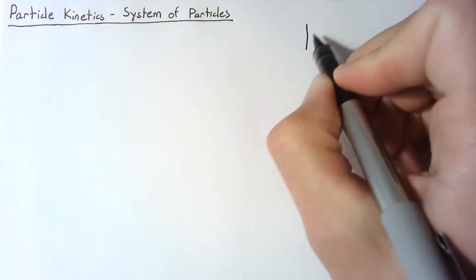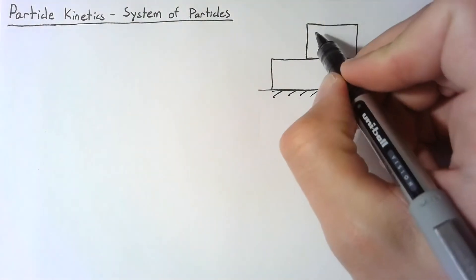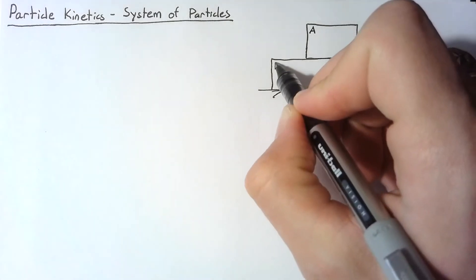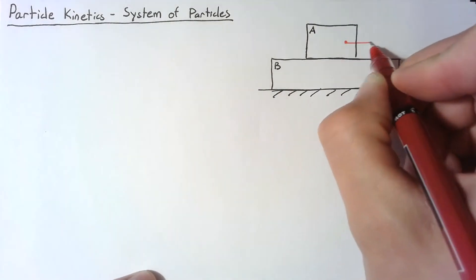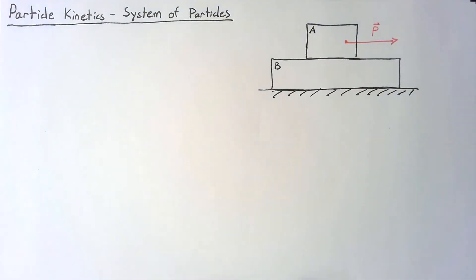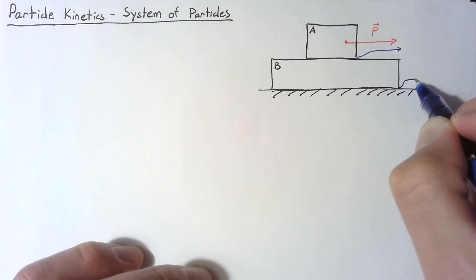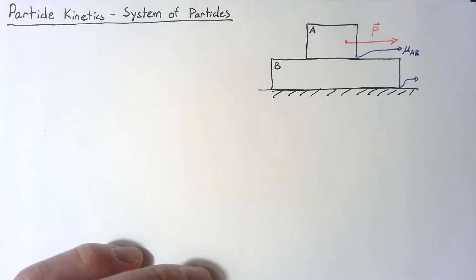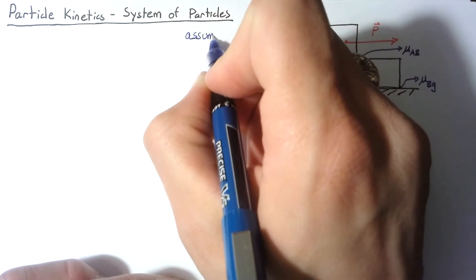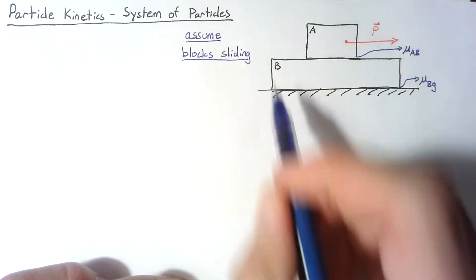The example we're going to look at is a pair of boxes, one sitting on top of the other. I'm going to call the top one A and the bottom one B. In this situation, we're going to have a force applied to block A that we'll call P. There's going to be some sliding that occurs between block A and block B, and between block B and the ground, so we need coefficients of friction. We are assuming that in both of these contacts, the blocks are sliding relative to each other.